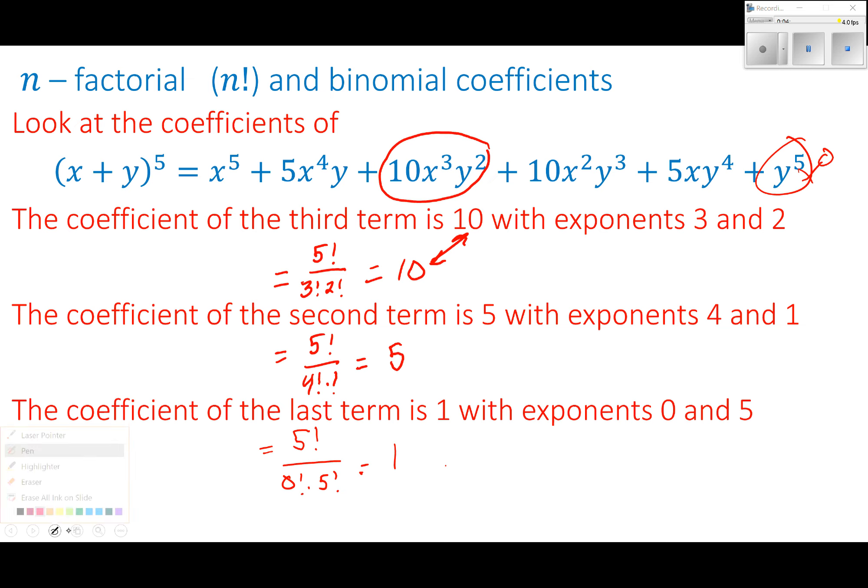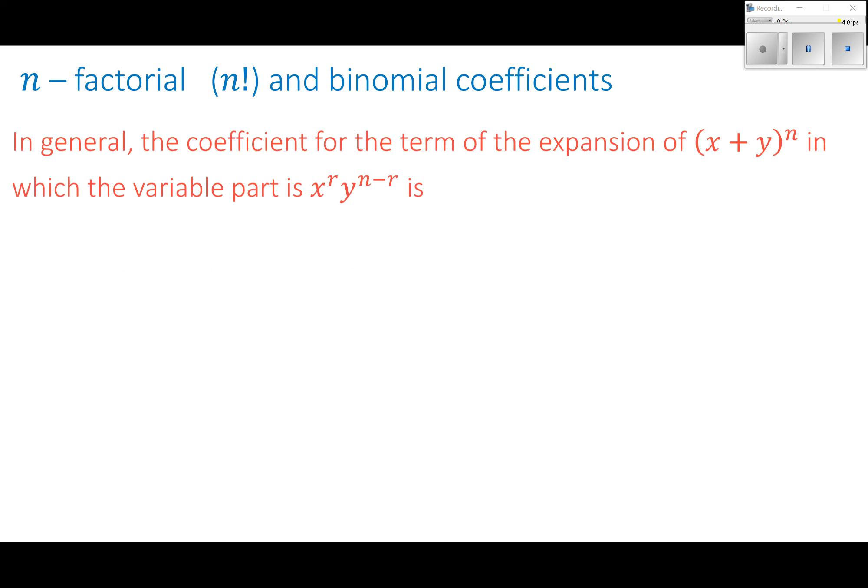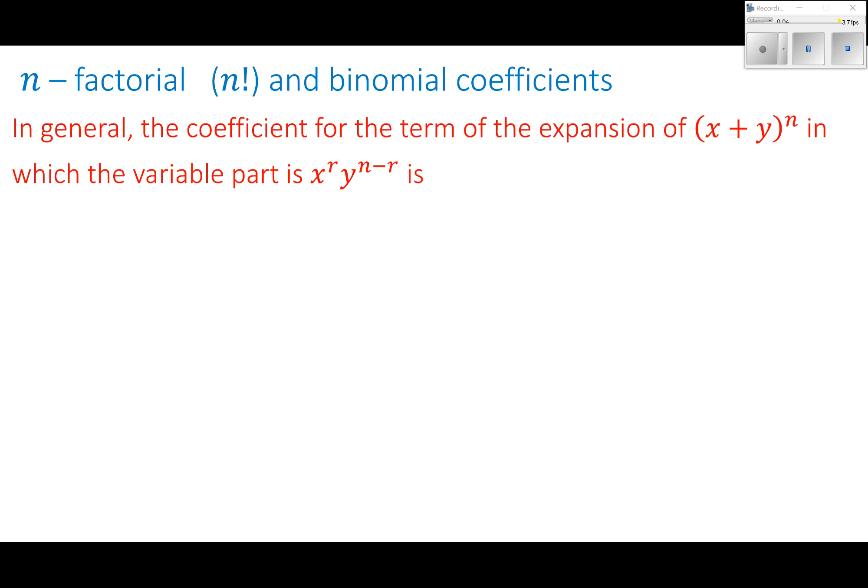So why was I using 5 factorial? Where was this 5 factorial coming from every time? That is represented by this exponent. So that's the n value. So in general, the coefficient for the term of the expansion, in which the variable part is x to the r, y to the n minus r. So here we've introduced a new variable, r, to represent one of our exponents. Okay? So again, r n minus r. What I'm doing, these exponents have to sum to be n.